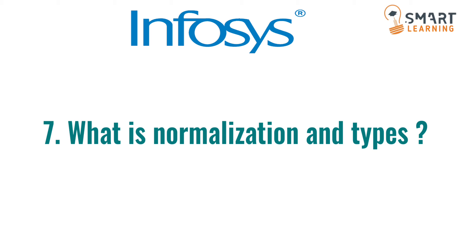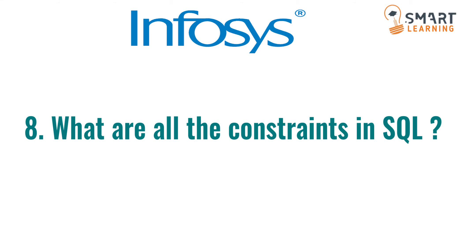The next question is from SQL: what is normalization and what are all the types in normalization? Normalization is used to reduce redundancy in relations, which are nothing but tables. There are six types — First Normal Form, Second Normal Form, Third Normal Form, BCNF (Boyce-Codd Normal Form), Fourth Normal Form, and Fifth Normal Form. Practically, we stop at BCNF and don't commonly use the fourth and fifth normal forms.